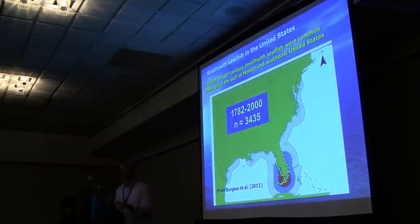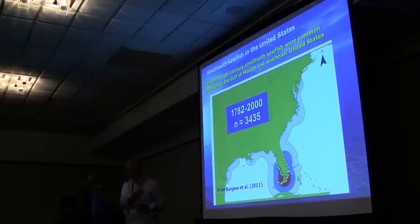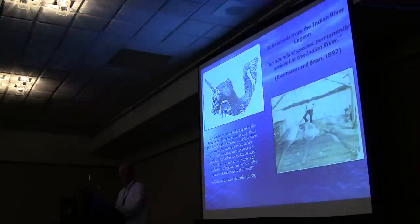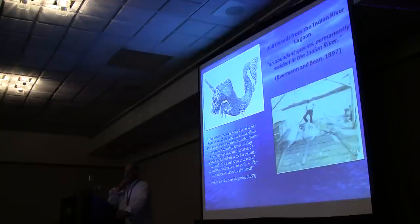If I could take you back in time to the United States around the end of the 19th century, you'll notice that the range of sawfish — based on museum records and reports — ranged from the coast of Texas and Mexico all the way up to the coast of New York State, so it had a very broad range. The red down here on the bottom indicates the core range where 95% of the occurrences occurred. It had a very large range around the turn of the century — so much so that early scientific investigations, such as a publication by Everman and Bean, reported 300 records of sawfish from a small river lagoon off the east coast of Florida.